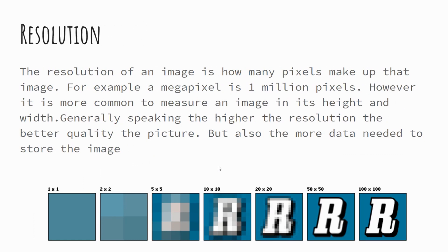Resolution is simply the measurement of how many pixels an image is made up of. In this example across the bottom, you've got a one by one image spanning all the way across to a 100 by 100 image, and you can see as the resolution increases so does the clarity. In the higher resolution images, the curves on the letter R start to look like curves rather than blocks as they do on the 20 by 20 image. It's not just a case of saying we have a megapixel — 1 million pixels. Giving the height and width of the image is crucial so the computer knows not to display those pixels in a continuous line. Resolution is therefore given in terms of height and width rather than just the total number of pixels.